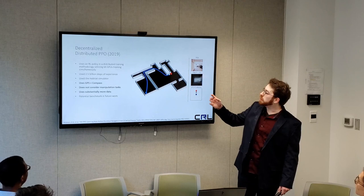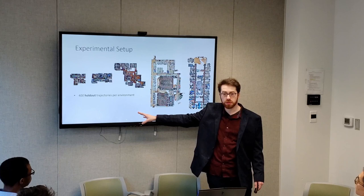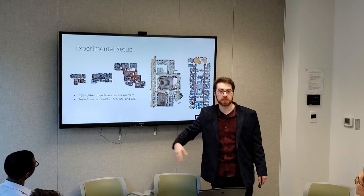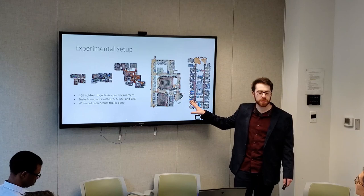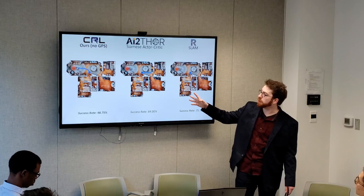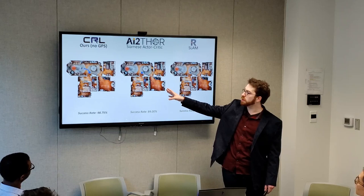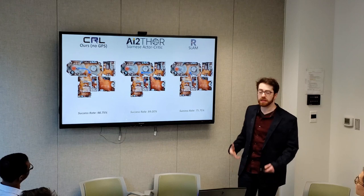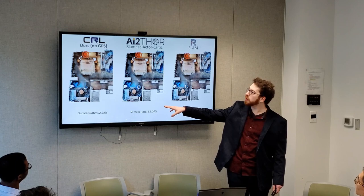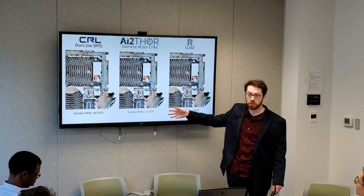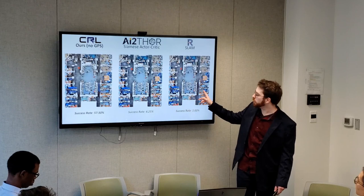The experimental setup uses five different environments, 400 holdout trajectories not observed during training. We tested ours with GPS, without GPS for goal checking, the SLAM algorithm RTAB-map, and the Siamese actor-critic network, where any collision during execution ended the run. Our agent successfully navigates to goals across environments — house 1 and house 17 perform very well; area 2 gets more complicated as the agent navigates down an entire corridor in a much bigger environment.